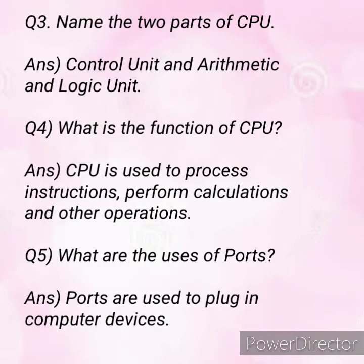Question three: name the two parts of CPU. The full form of CPU is Central Processing Unit, also known as the brain of the computer. The two parts of CPU are Control Unit and Arithmetic and Logic Unit. The short forms are CU and ALU respectively.